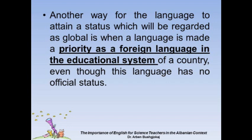Another way for a language to attain a global status is when it is made a priority as a foreign language in the educational system of a country, even though it has no official status. It becomes the language in which children are most likely to be taught when they arrive in school, and the most available to adults who, for whatever reason, never learned it or learned it badly in their early educational years.